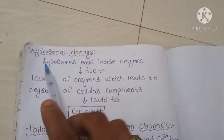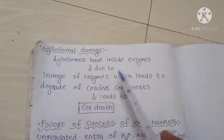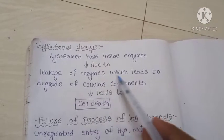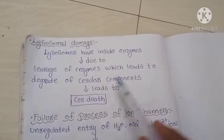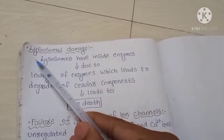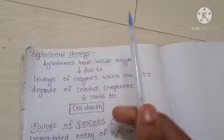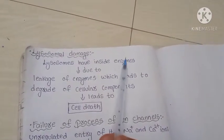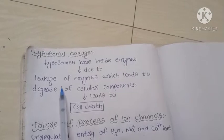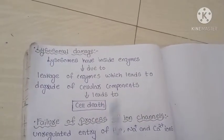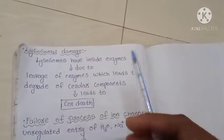Now we will see lysosomal damage. Lysosomes contain internal enzymes. Due to the leakage of these enzymes, cellular components are degraded, which leads to cell death. As we know, the lysosome is called the suicide bag of the cell. The leakage of its digestive enzymes degrades cellular components, leading to cell death.